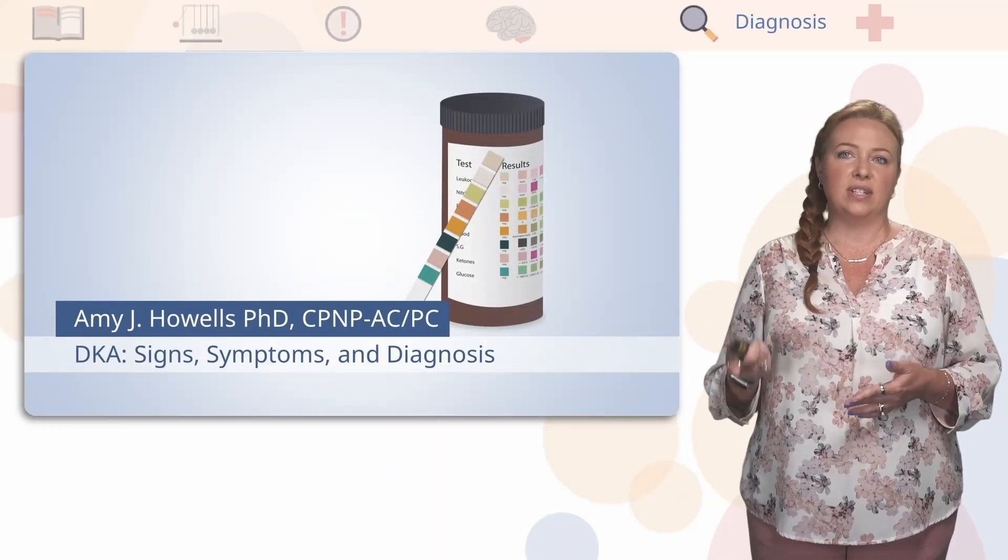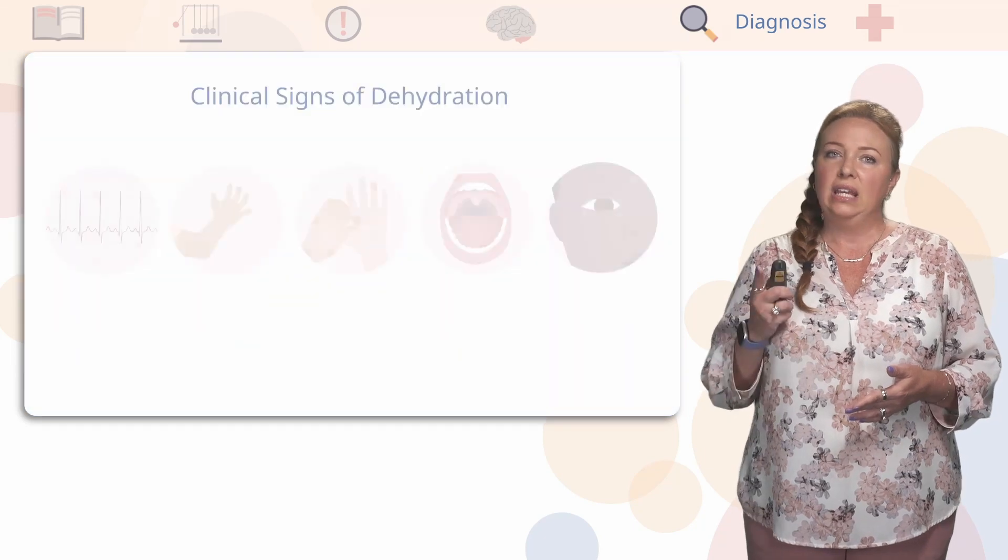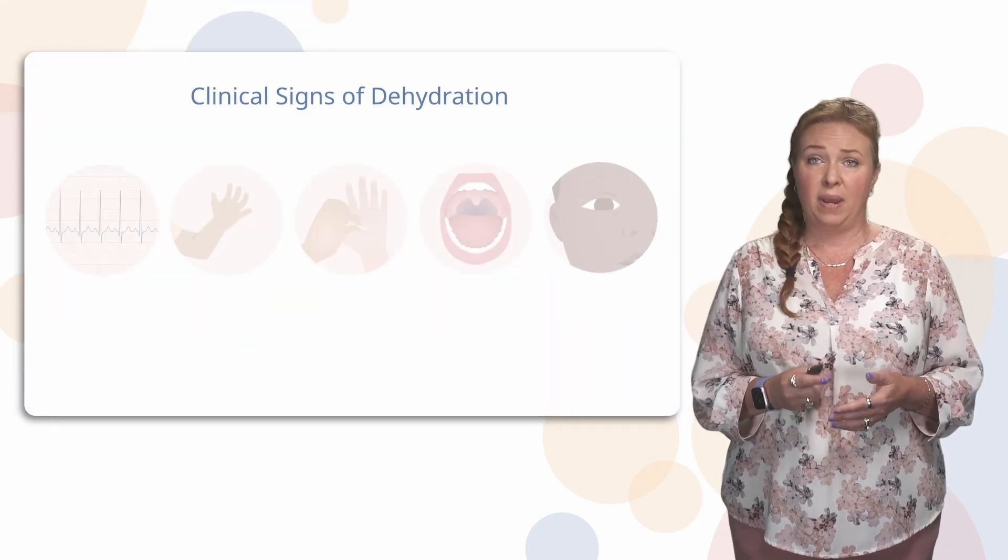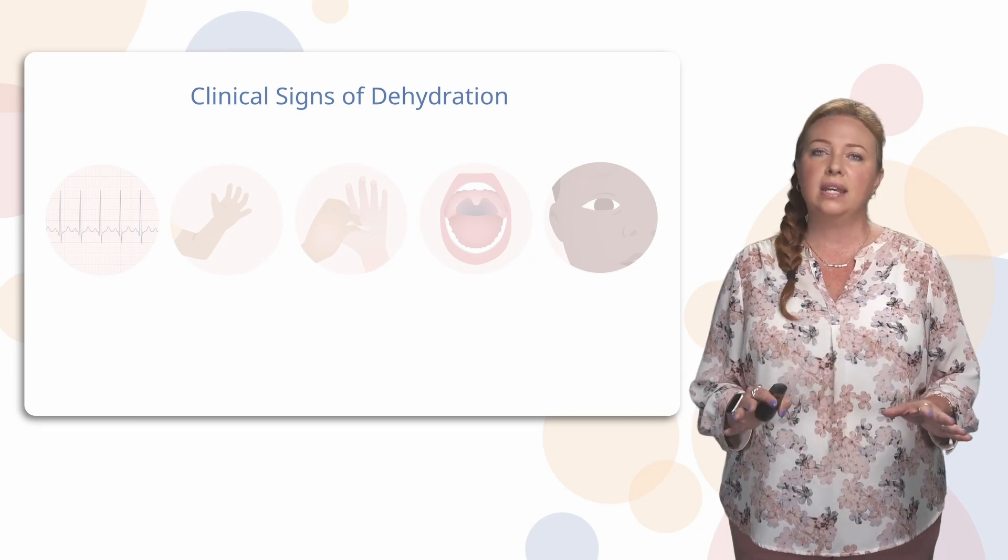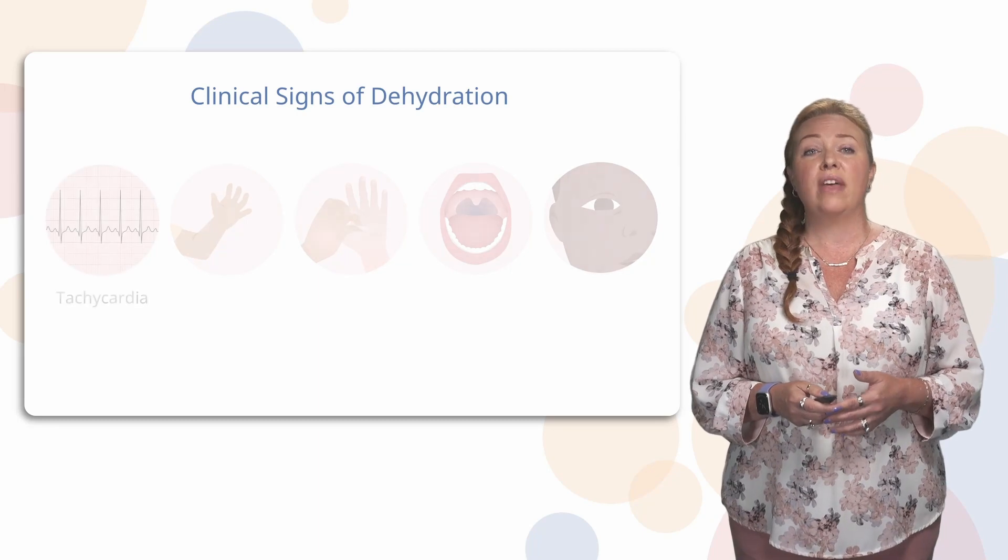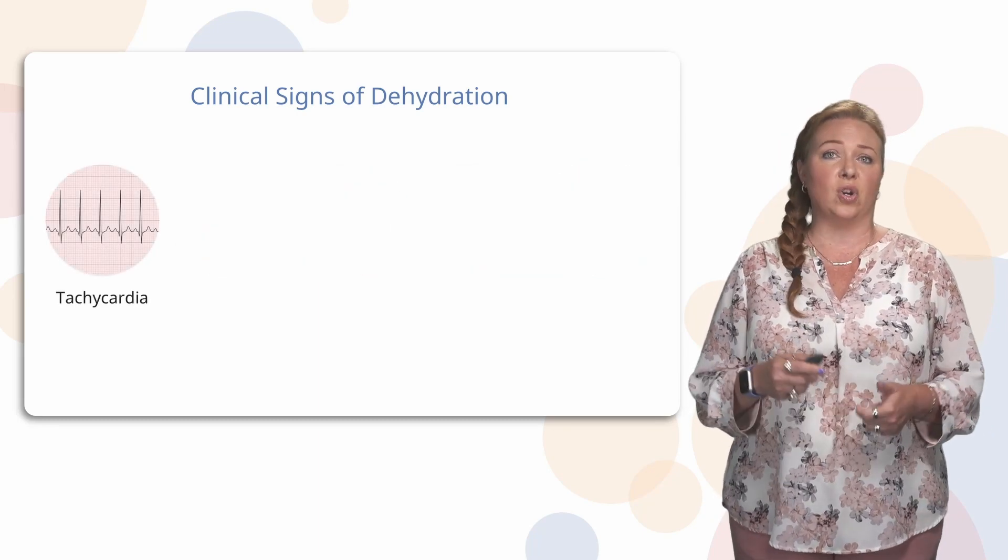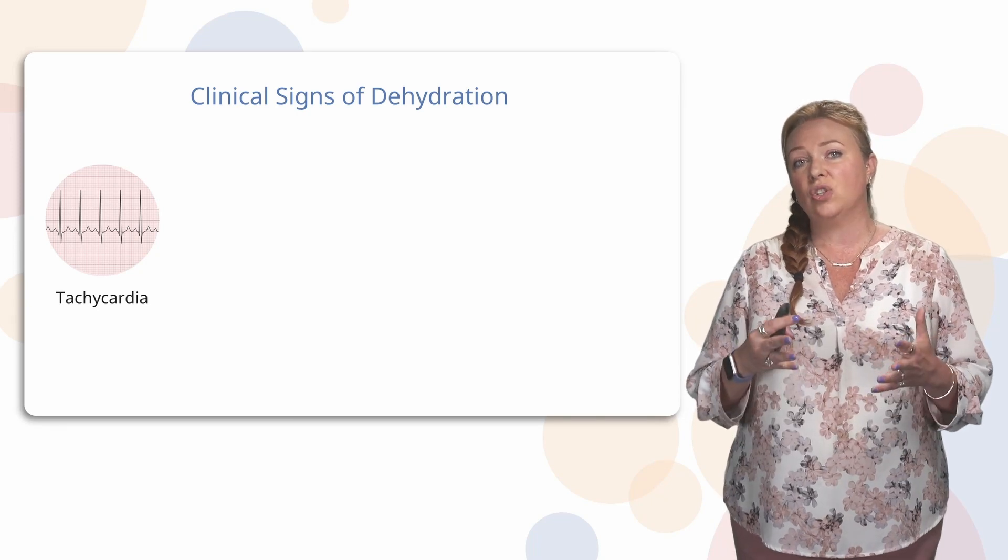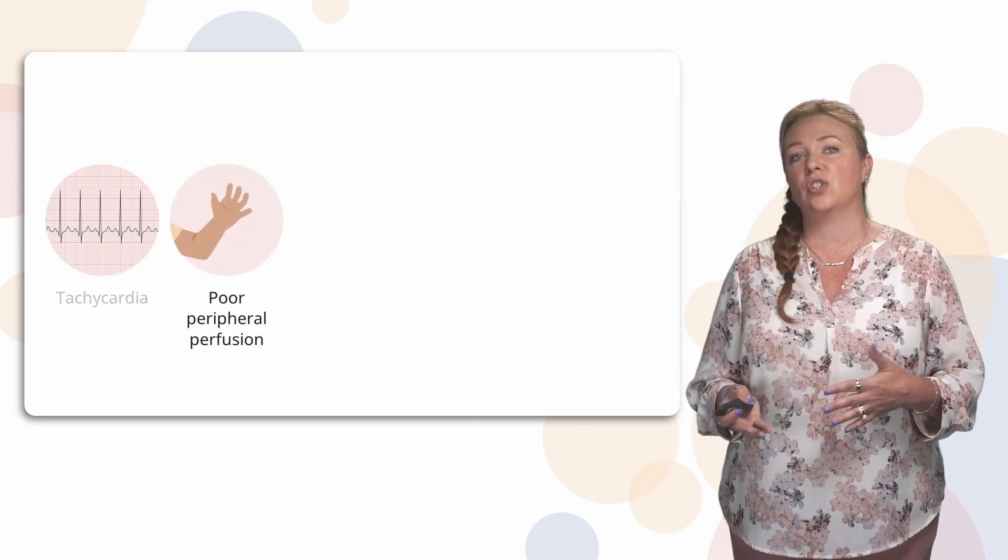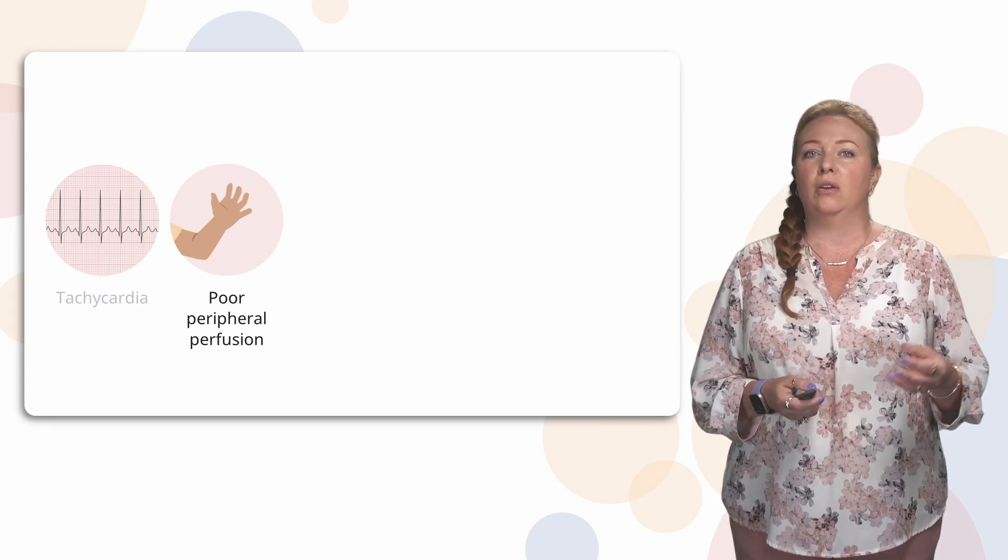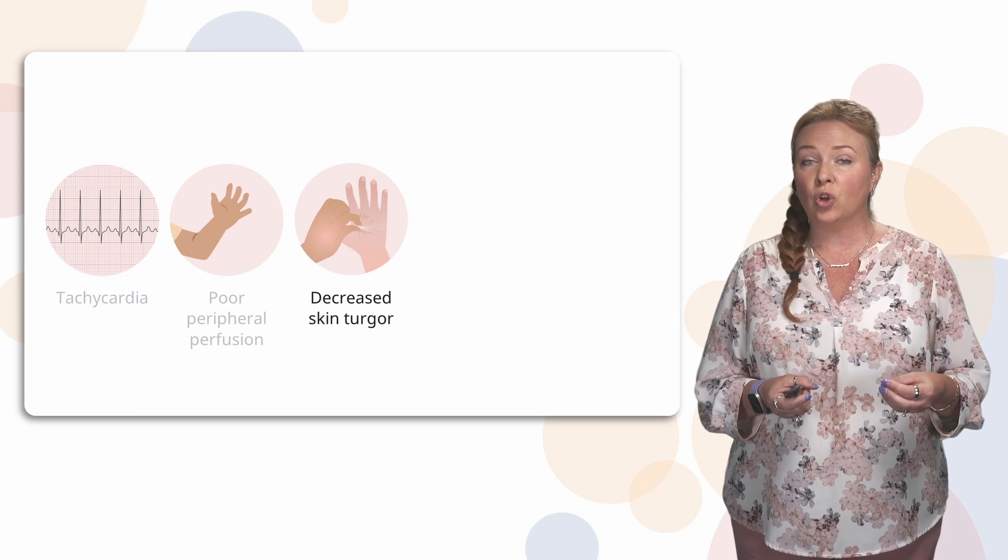What are some other clinical signs you're going to notice? Eventually, you're going to see signs of dehydration because patients really just cannot keep up with the amount that they are urinating. So that heart rate is going to go up. You're going to see that tachycardia. You are probably eventually going to see poor peripheral perfusion. So that cap refill is not going to look as good.